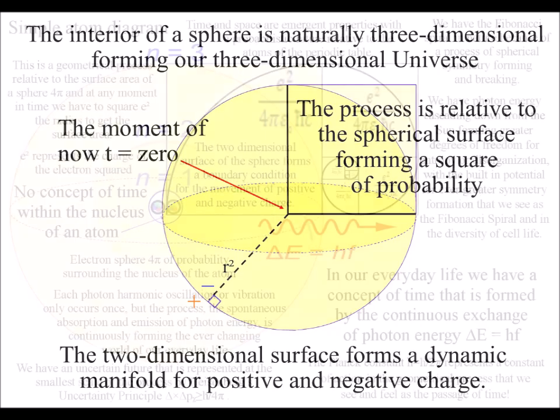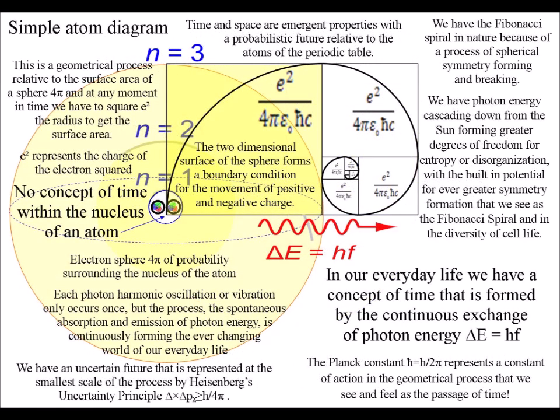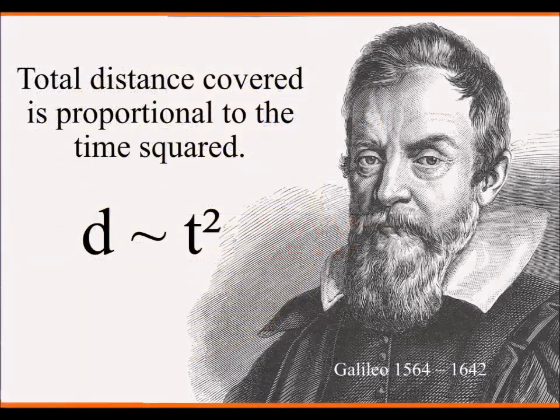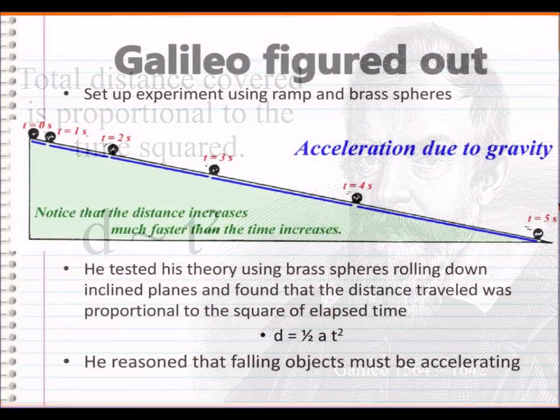The process starts with the absorption and emission of light photon energy, with the electron squared and with the speed of light squared, and ends with falling bodies being directly proportional to the square of the time they take to fall.